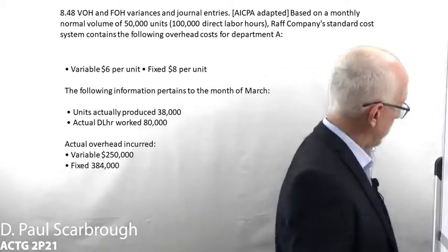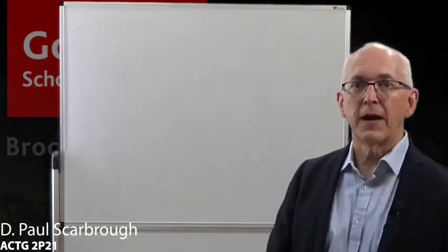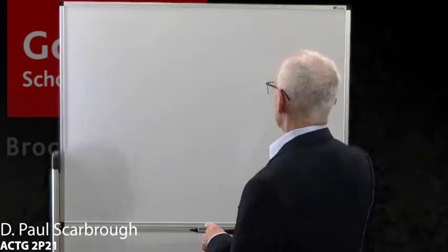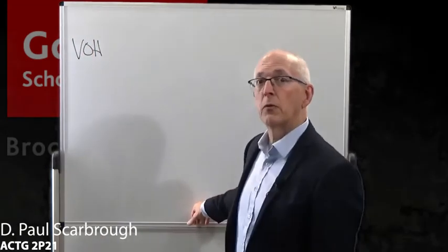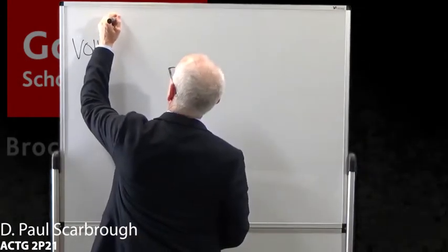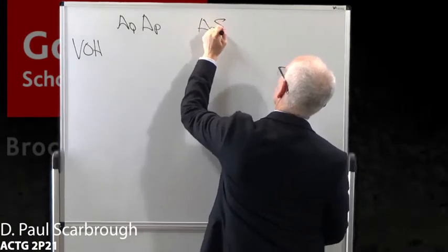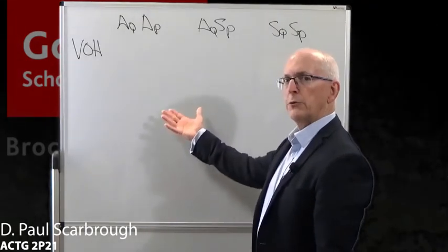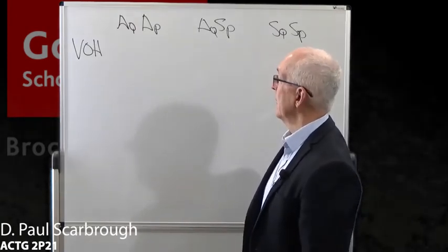Here we go — problem 8.48. I am going to start as I start everything in accounting: by getting down on paper what I know. Try to get the facts clear, because accounting is complicated and the more stuff floating around your head, the more confusing it gets. We are going to work on variable overhead first, and then after we finish that, we will work on the fixed overhead. We are going to use the same structure: AQ times AP, AQ times SP, SQ times SP — same overall logic.